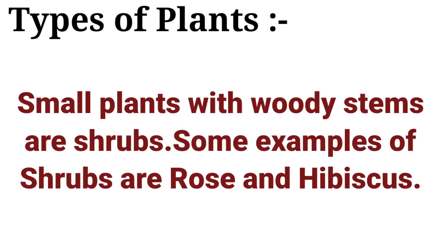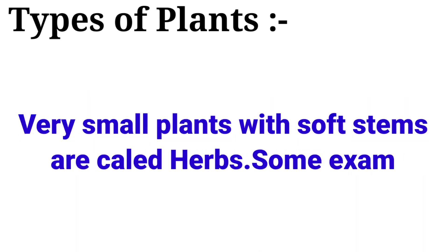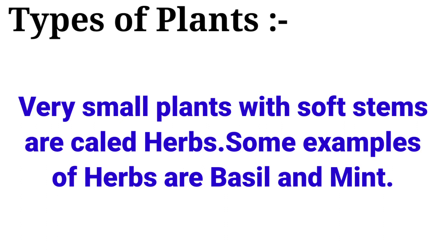Some plants with woody stems are shrubs. Some examples of shrubs are rose and hibiscus. Very small plants with soft stems are called herbs. Some examples of herbs are basil and mint.